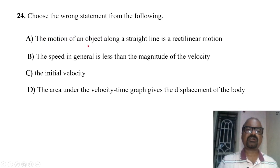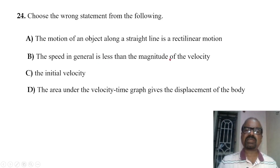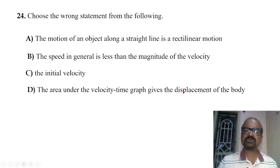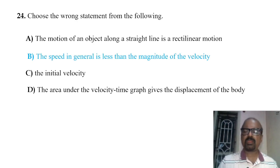Choose the wrong statement: the motion of an object along a straight line is rectilinear motion — correct. Speed in general is less than the magnitude of velocity — this is wrong, because speed is generally greater than or equal to the magnitude of velocity. The area under the velocity-time graph gives displacement — correct.